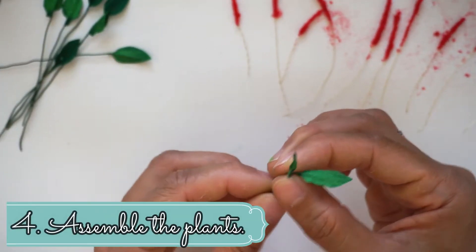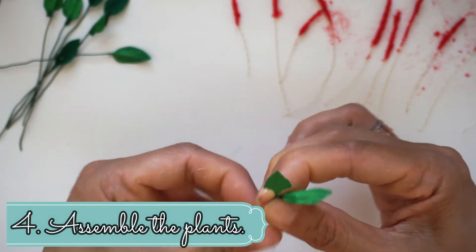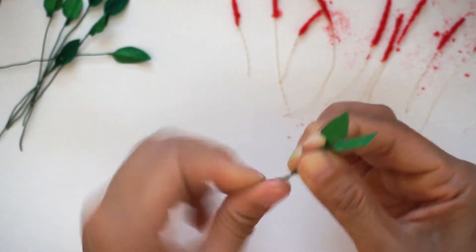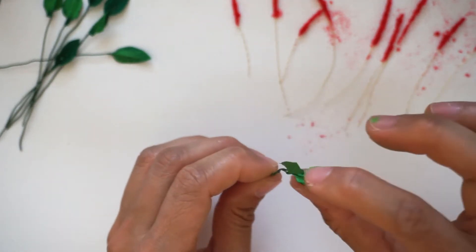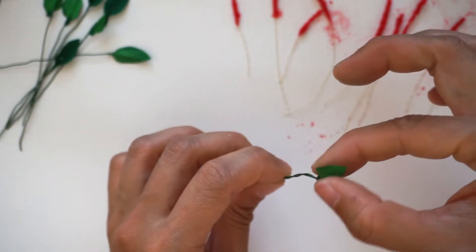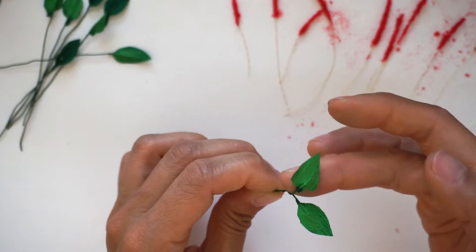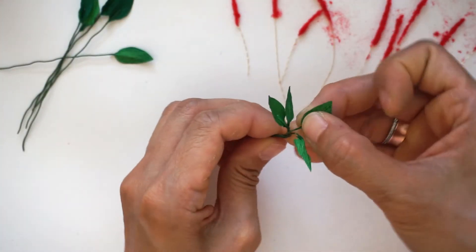Once you have prepared all the tails and the leaves, you can now assemble the plant. First, intertwine two leaves together and then add another leaf until you have a set of four or five leaves.